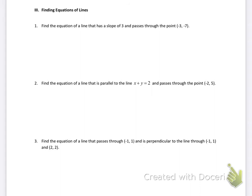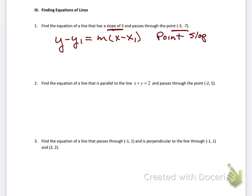Finding equations of lines — this is where most students have the biggest problems. First problem: find the equation of a line with a slope of 3 that passes through the point (negative 3, negative 7). I'll use point-slope form: y minus y1 equals m times (x minus x1). My slope is 3. The x-value is negative 3, so it becomes x minus (negative 3), which is x plus 3. The y-value is negative 7, so it becomes y minus (negative 7), which is y plus 7. Done — point-slope is by far the easiest form.